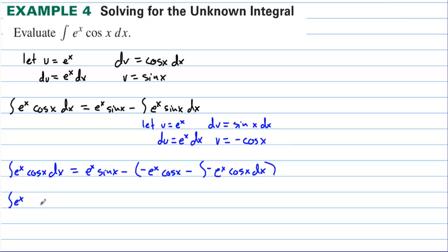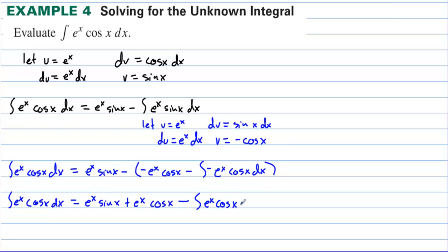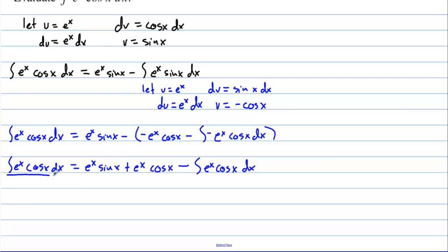Cleaning up the negative signs: the integral of eˣ·cosine(x) dx equals eˣ·sine(x) plus eˣ·cosine(x) minus the integral of eˣ·cosine(x) dx. We notice we have the same integral on both sides, so we add the integral of eˣ·cosine(x) dx to both sides.